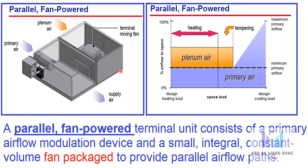When the space cooling load drops below the minimum primary airflow setting, the small fan activates to mix warm plenum air with the cool primary air. This increases the total airflow to the space and creates a warmer supply air condition. If additional heating is required with the terminal fan on, a heating coil can be used to further warm the supply air. Operating the fan is a form of energy recovery — it tempers the supply air with heat from the building and lights carried by the return air rather than with new energy, thus delaying the start of the heating coil. When in cooling mode, the supply airflow to the space equals the primary airflow. When in tempering and heating modes, the space receives a constant supply airflow equal to the minimum primary airflow plus the airflow delivered by the terminal fan. Usually the primary airflow is not allowed to shut off completely because of the space requirements for ventilation air.